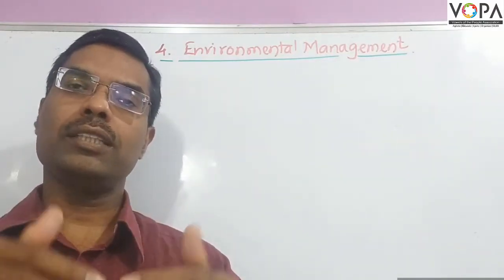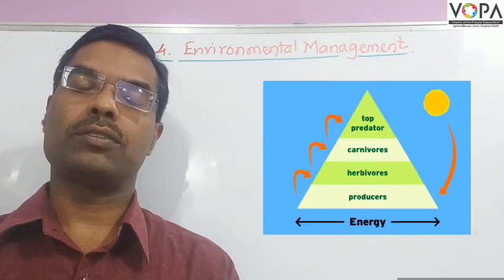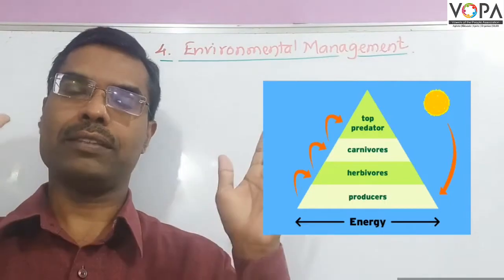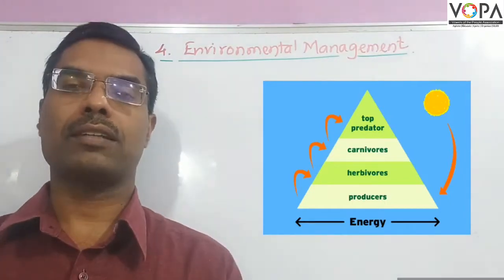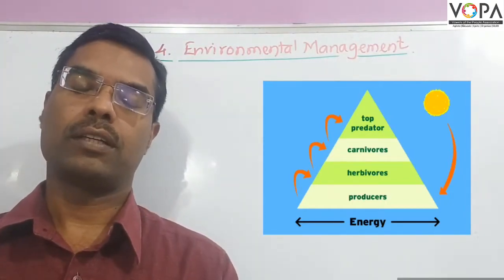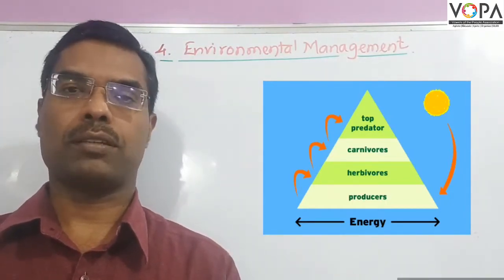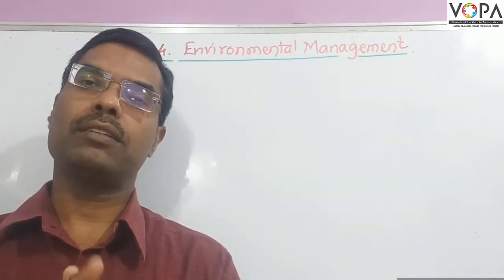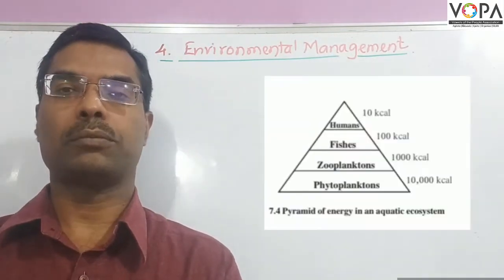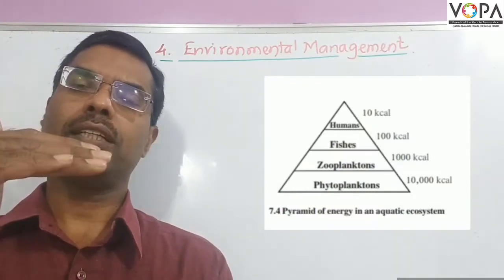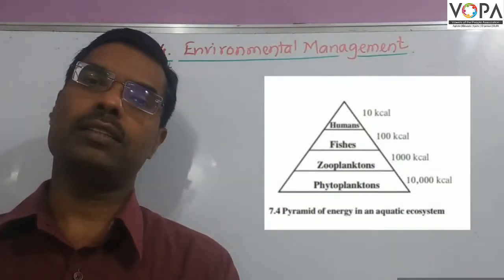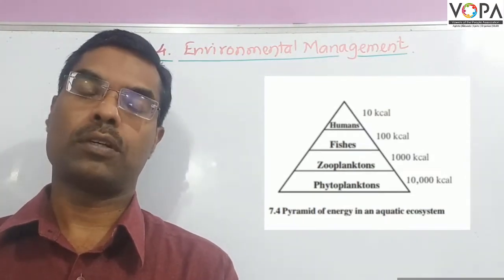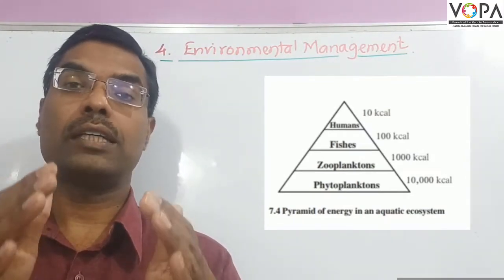All the energy is not given by the producers to the herbivores or the primary consumers. Only 10% energy is transferred to the next trophic level. The first trophic level is producer, the second trophic level is primary consumer, the third trophic level is secondary consumer. Only 10% energy is transferred from one energy level to another. It is called the 10% law, or Hilton's law.